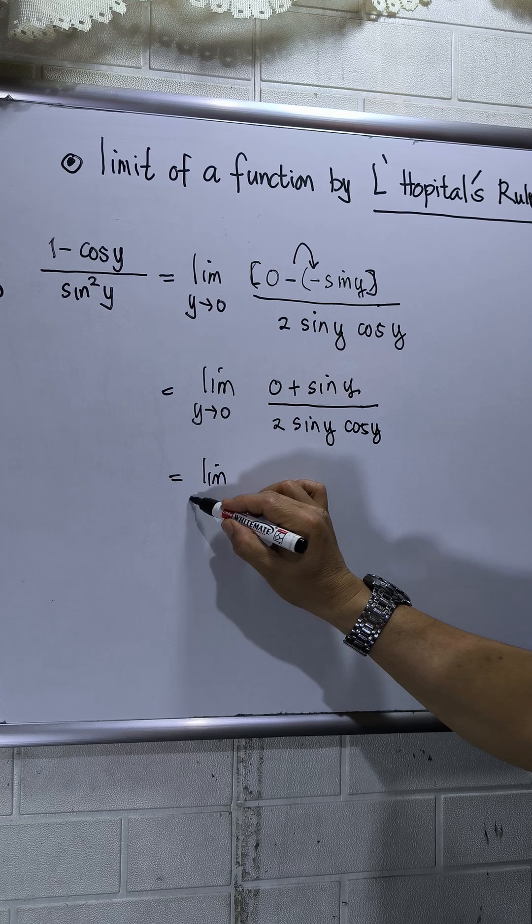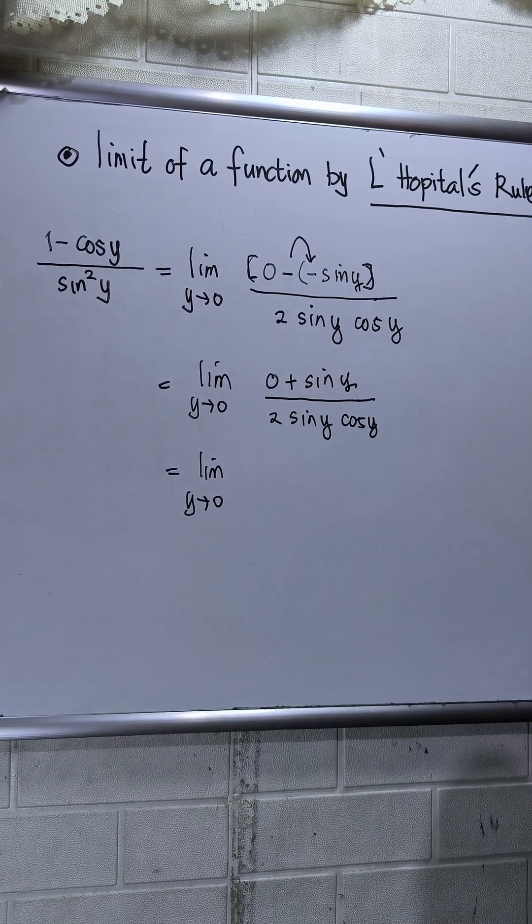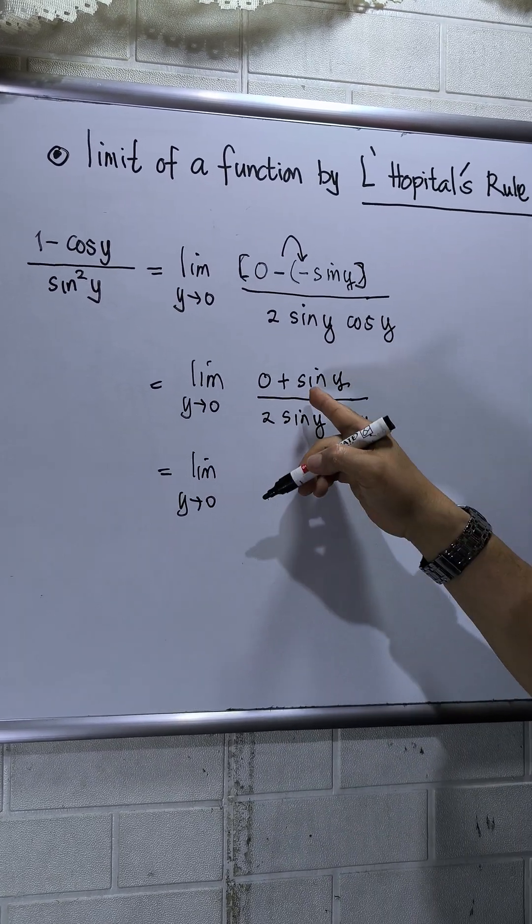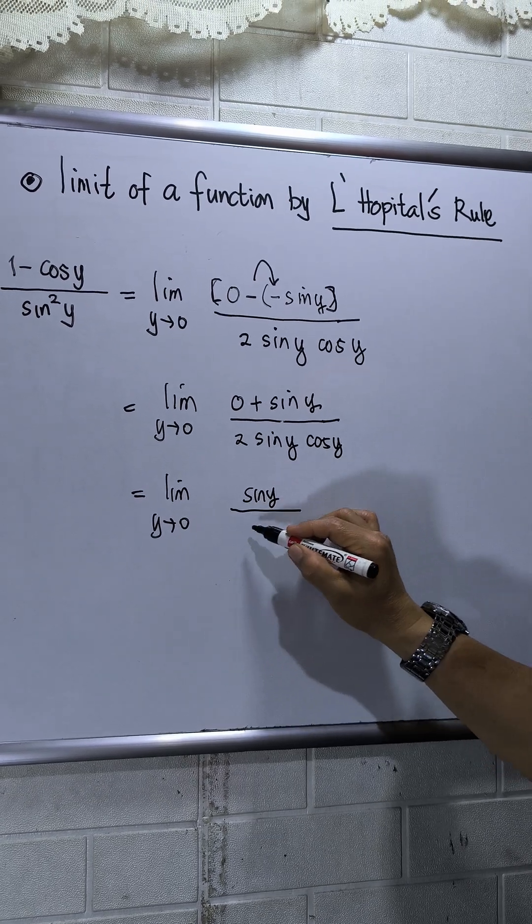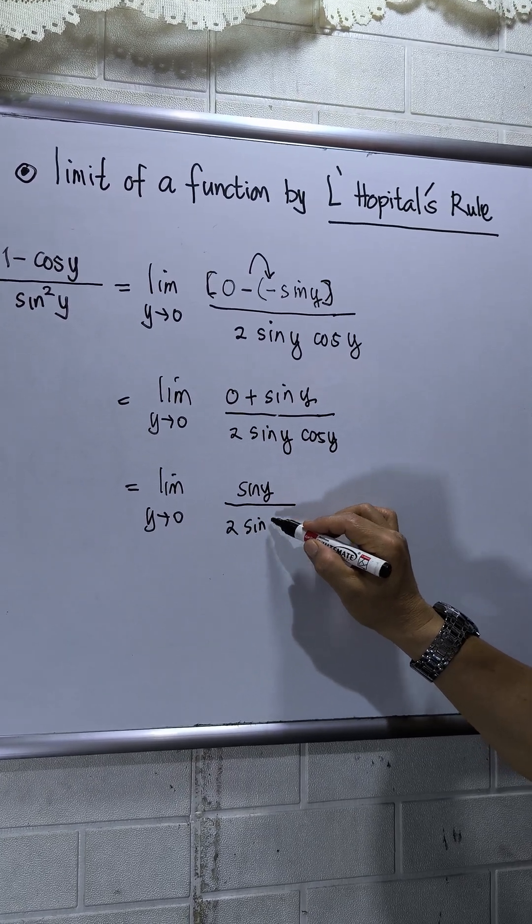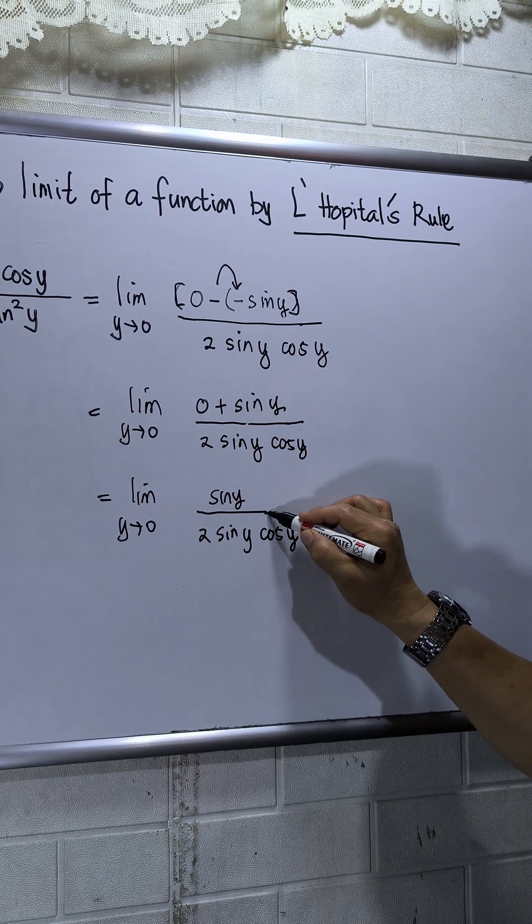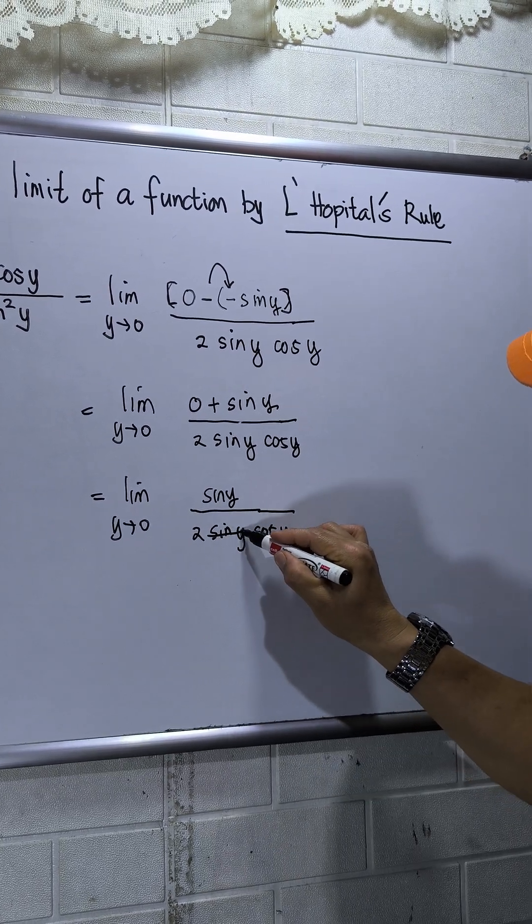So this will be limit as y approaches 0, 0 plus sin y, that will be sin y. Then this will be 2 sin y times cos y. So sin y will be crossed out. I have now limit as y approaches 0.